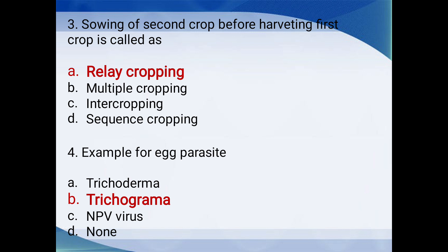When the second crop is sown into the first crop before it is harvested, that is called relay cropping. Relay cropping is a type of multiple cropping.